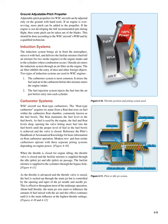The induction system brings air in from the atmosphere, mixes it with fuel, and delivers the fuel/air mixture — fuel/oil/air mixture for two-stroke engines — to the engine intake and cylinders where combustion occurs. Outside air enters through an air filter on the engine, which inhibits the entry of dust and other foreign objects. Two types of induction systems are used in WSC engines: 1. The carburetor system, which is most common and mixes the fuel and air in the carburetor before the mixture enters the engine intake; and 2. The fuel injection system, which injects the fuel into the air just before entry into each cylinder.